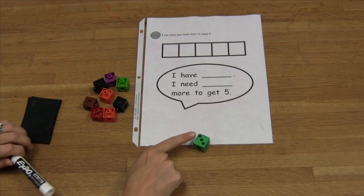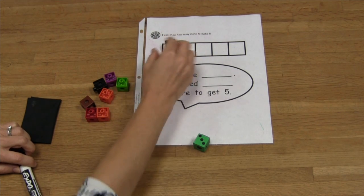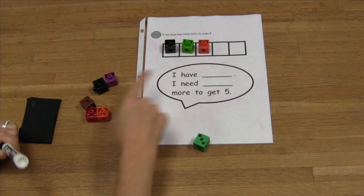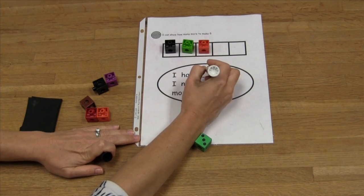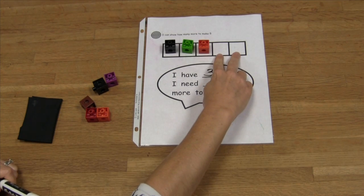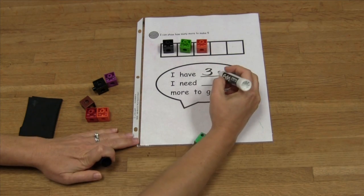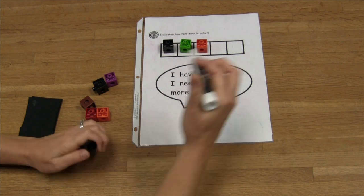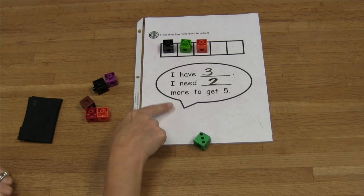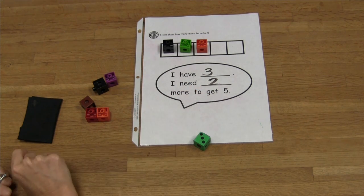Count the number: one, two, three. I have three. Place that many manipulatives in the five frame, then write 'I have three.' After counting, count how many are needed to make five: one, two. Write that number in the next blank. Then you can read the sentence frame: 'I have three, I need two more to get five.'